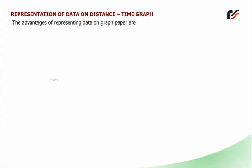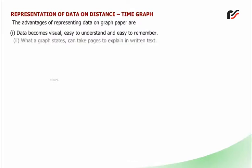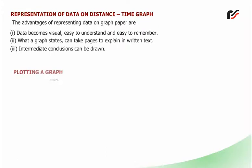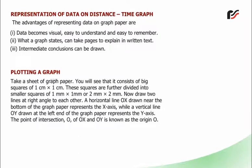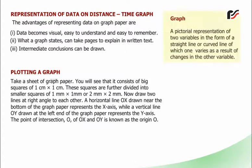The advantages of representing data on graph paper are: 1. Data becomes visual, easy to understand and easy to remember. 2. What a graph states can take pages to explain in writing. 3. Intermediate conclusions can be drawn. Plotting a graph: Take a sheet of graph paper with big squares of 1 cm × 1 cm, further divided into smaller squares of 1 mm × 1 mm or 2 mm × 2 mm. Draw two lines at right angles — a horizontal line Ox near the bottom (x-axis) and a vertical line Oy at the left (y-axis). Their intersection O is the origin.